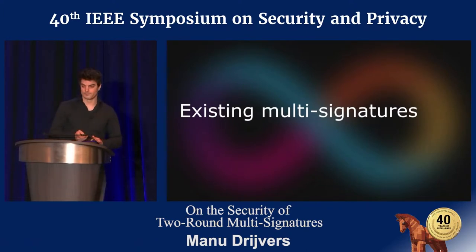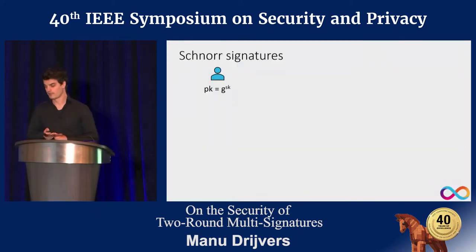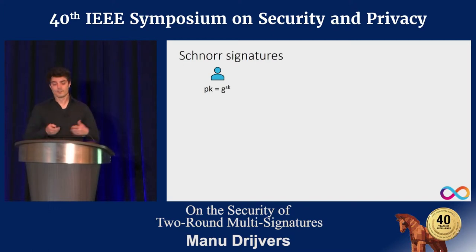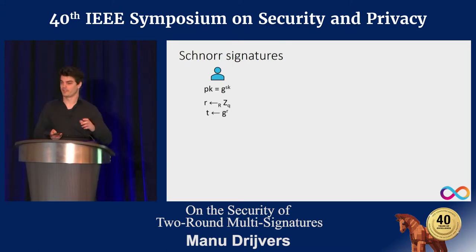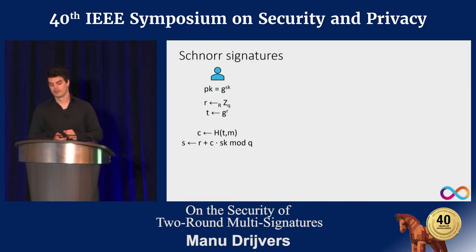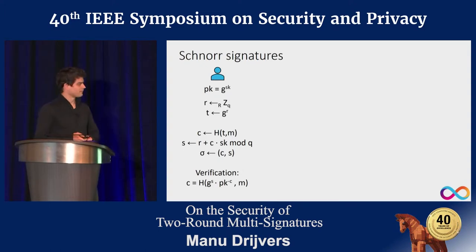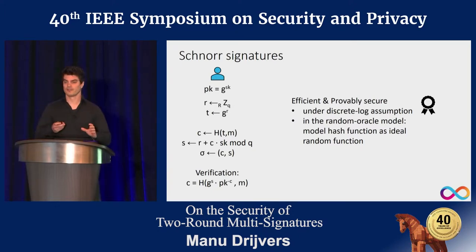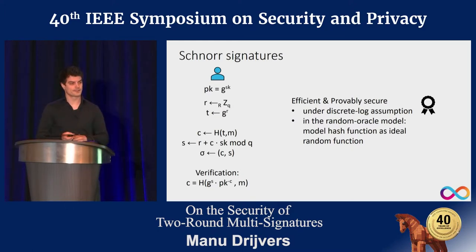Multi-signatures have many use cases, so let's see how we can build them. Starting with the basic Schnorr signature scheme: a signer has a public key g to the secret key. To sign a message, it picks some randomness, computes a value t = g to the randomness, then hashes t along with the message to get c, and computes s = randomness + c × secret key. The pair (c, s) forms the signature. It's efficient and provably secure under the discrete log assumption. Notably, the secret key only appears in s multiplied by some constant — a structure we'll exploit later.